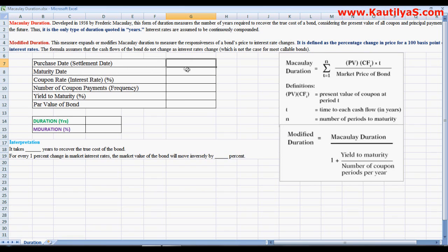Now assuming that the purchase date or the settlement date of a bond is 1st January 2010, and maturity date, assuming that this is a five-year bond, so maturity date is 31st December 2014. So here we have a five-year bond.